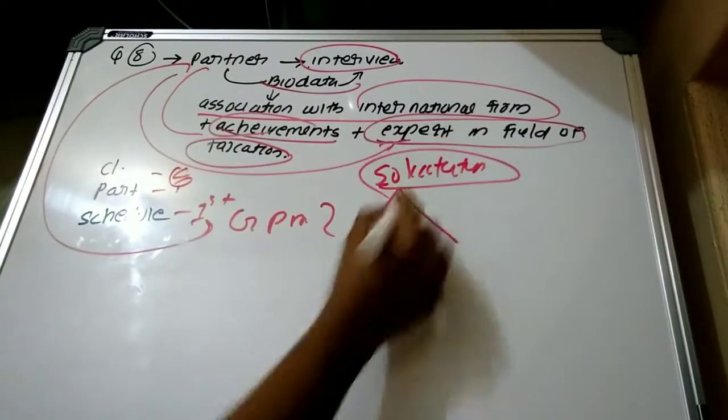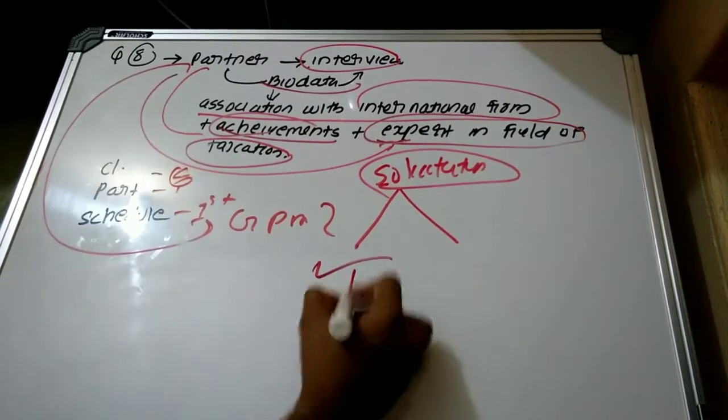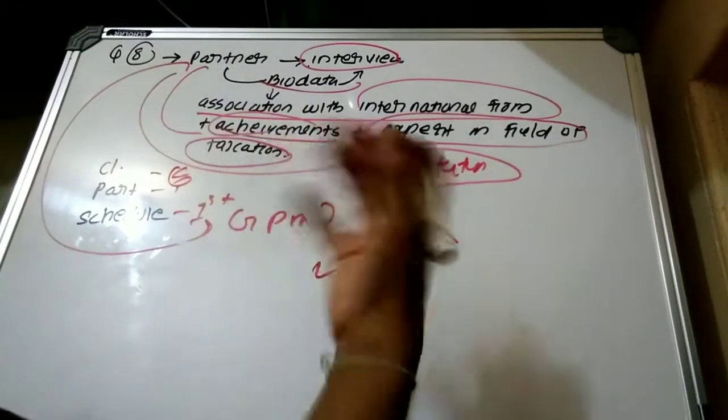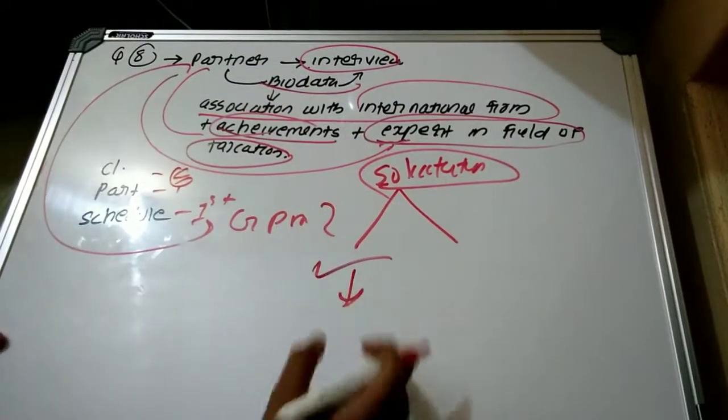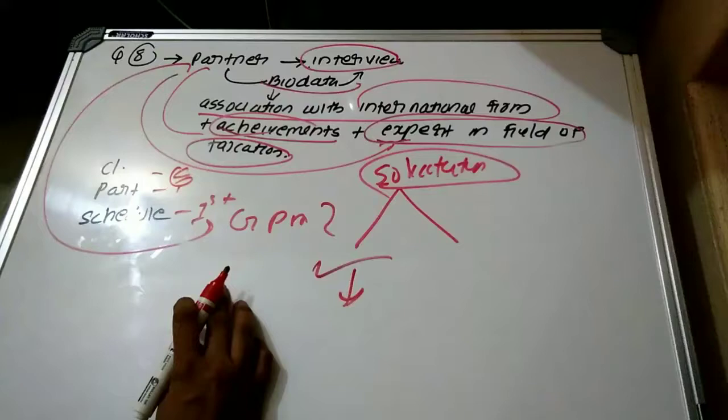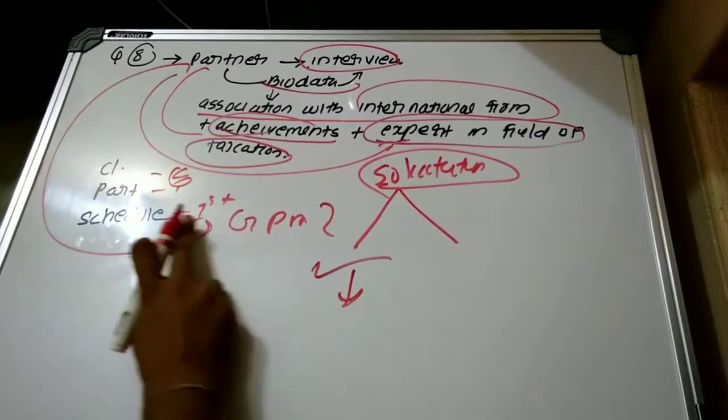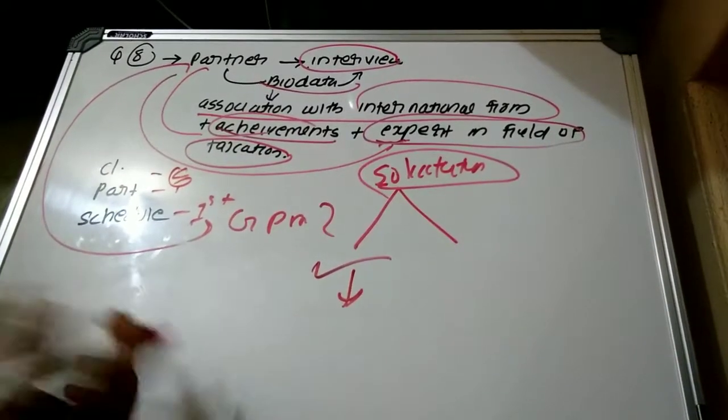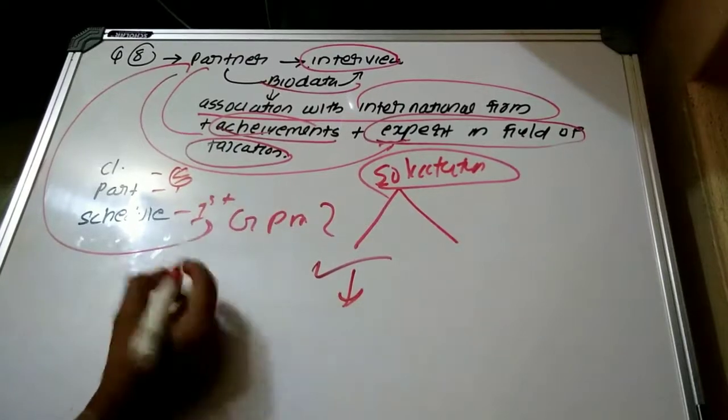This is a kind of solicitation—he is soliciting or promoting his work or trying to generate clients or get more professional work. So he is guilty of professional misconduct as per Clause 6, Part 1, Schedule 1.